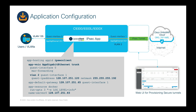Here we have a 9300 series switch highlighted in blue, which is hosting the IPsec Client by Kodi Lime application. We have a user connected to the switch via VLAN 135. The intent is to build an IPsec tunnel from the switch to Cisco Umbrella to provide the user with internet connectivity. To achieve this, the first step is to spin up the application, which requires a few lines of configuration to be pushed.